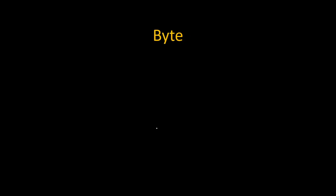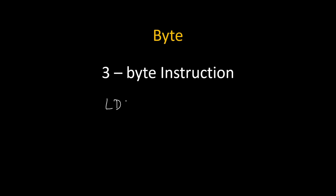Now let's talk about how many bytes this instruction is. It will be a 3-byte instruction. Why? Because for LDA 7050H: LDA takes the first byte, 50 is the second byte, and 70 is the third byte. So whenever you see a 4-digit hex number in an instruction, it will be a 3-byte instruction.